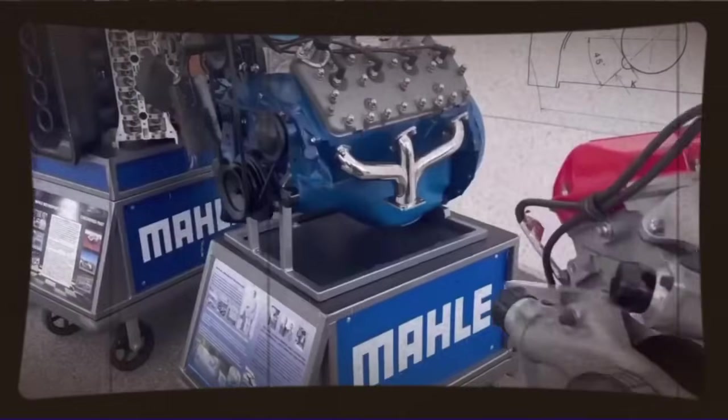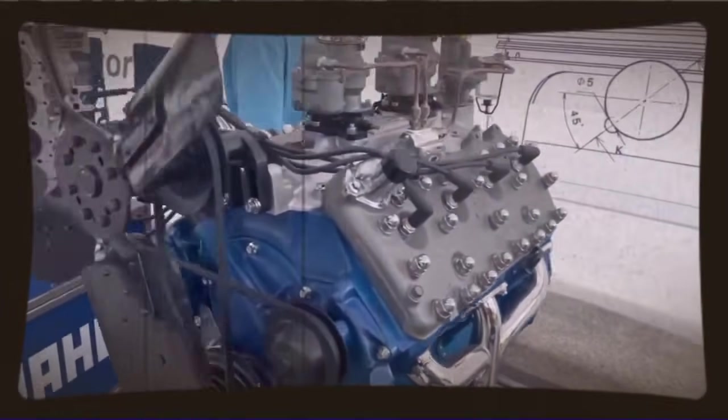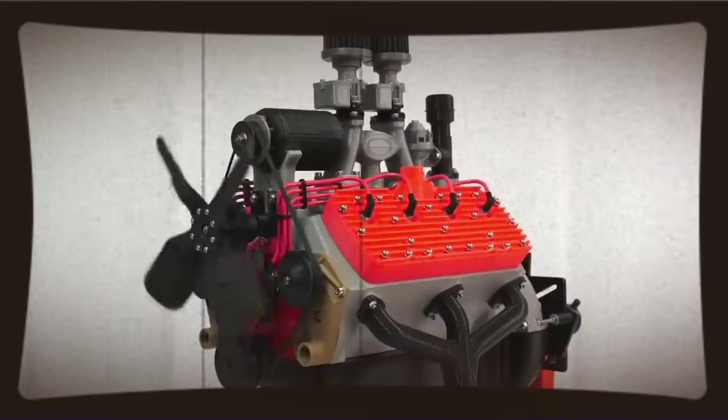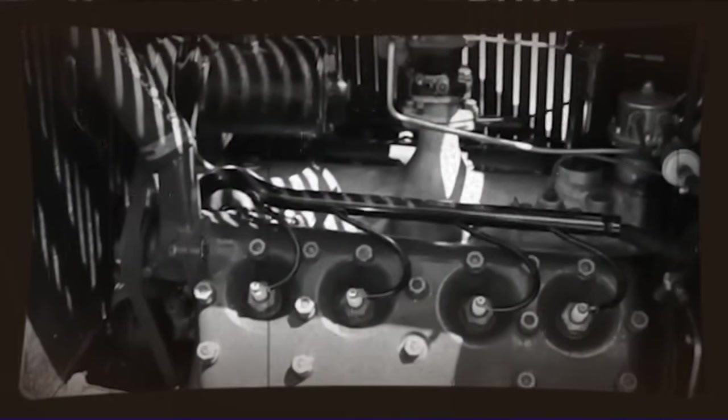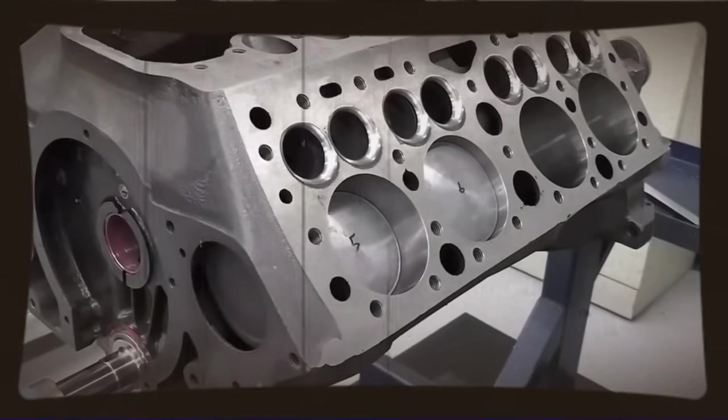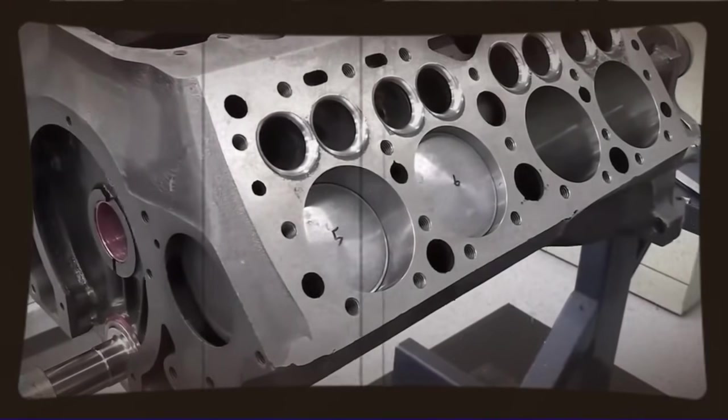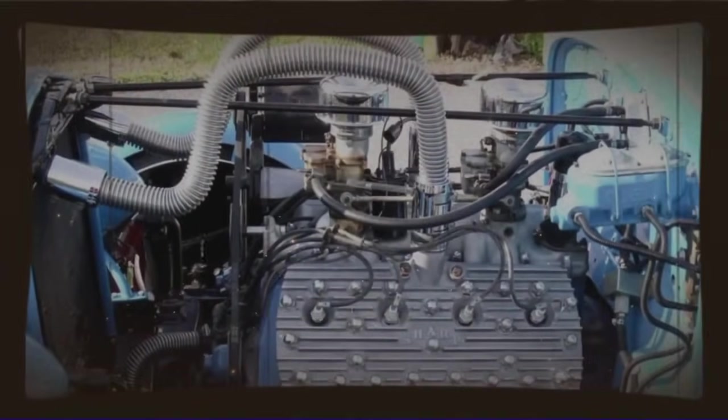The year is 1932, and if you know anything about automotive history, you know this was the year Ford dropped a bombshell on the industry. The Ford Flathead V8 had just hit the market and it was revolutionary. For the first time, average Americans could buy a car with a smooth, powerful V8 engine without mortgaging their house. Ford was riding high, and the Flathead V8 was the talk of every garage, every mechanic's shop, and every racing circuit from Detroit to Los Angeles.